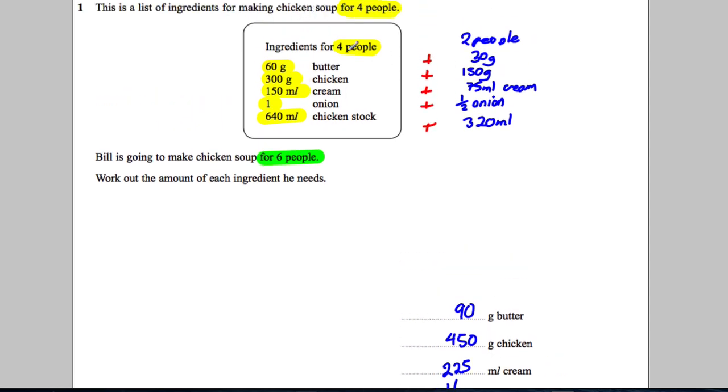Now what you could have done is work out for one person and multiply by six as well. So you could have divided these by four to get how much for one, and then multiply by six. But I think this is a much easier method.